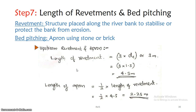First, upstream revetment and apron. Upstream revetment is the design of the apron. The length of revetment is given as 3 times the depth, or a minimum of 3 meters. The depth is 1.5 meters, so 3 into 1.5 is 4.5 meters. Our revetment is provided for a length of 4.5 meters.